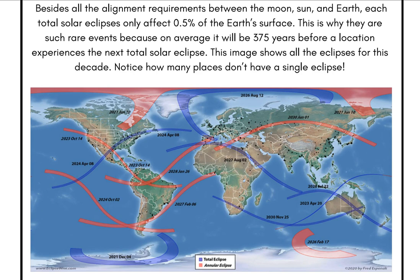The big thing to point out is how many locations don't get to experience an eclipse — it's quite a few. Having that conversation with students and even modeling Earth's rotation shows how all the different components — Earth, moon, and sun — really need to be aligned for an eclipse to happen and be seen.